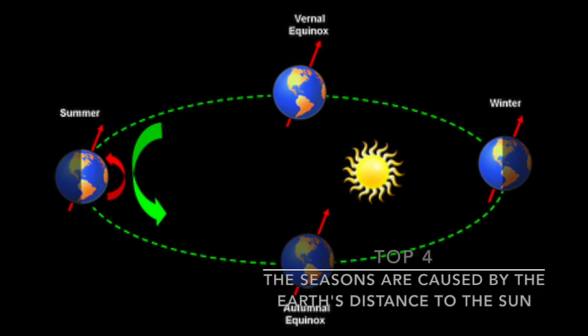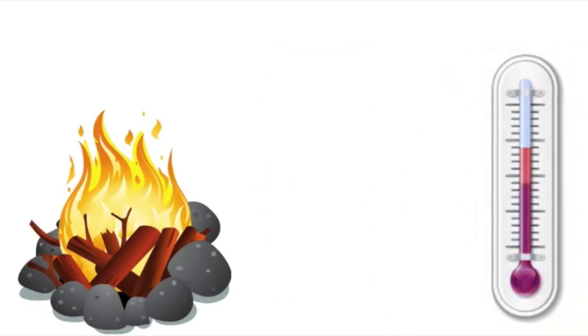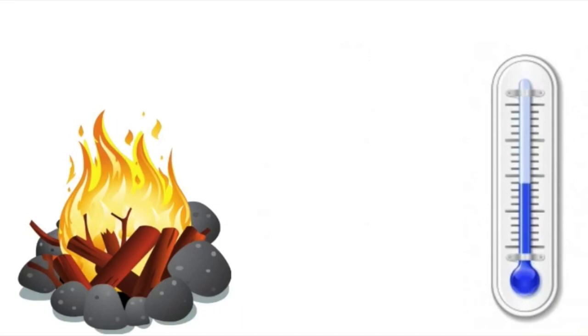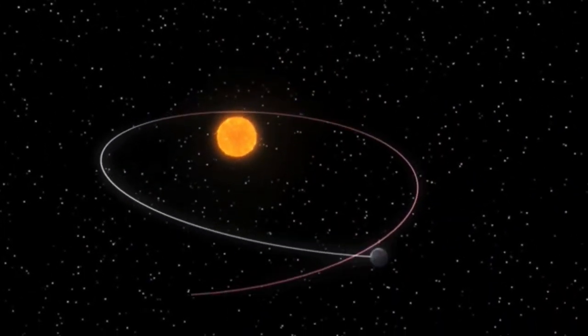Top 4. Seasons are caused by the Earth's distance from the sun. You will normally feel warmer when you are near a fire or anything that is burning, and colder when you are away from it. This is why it is sensible to say that the Earth is closer to the sun during the summer and farther away in the winter.